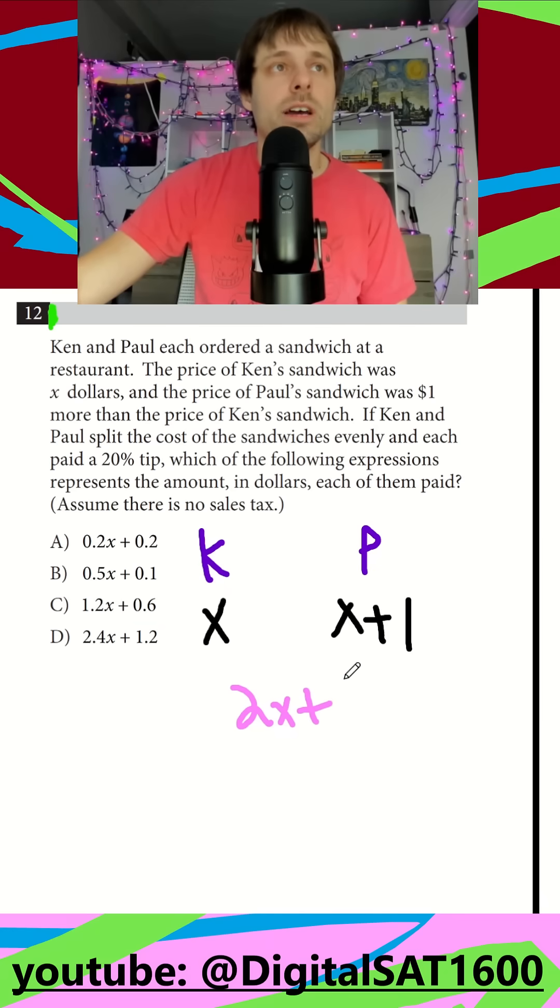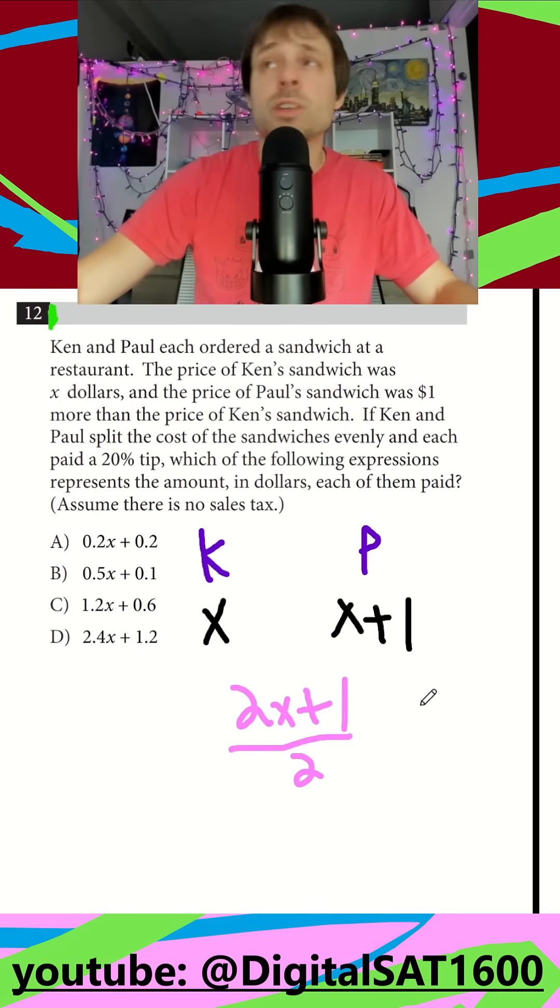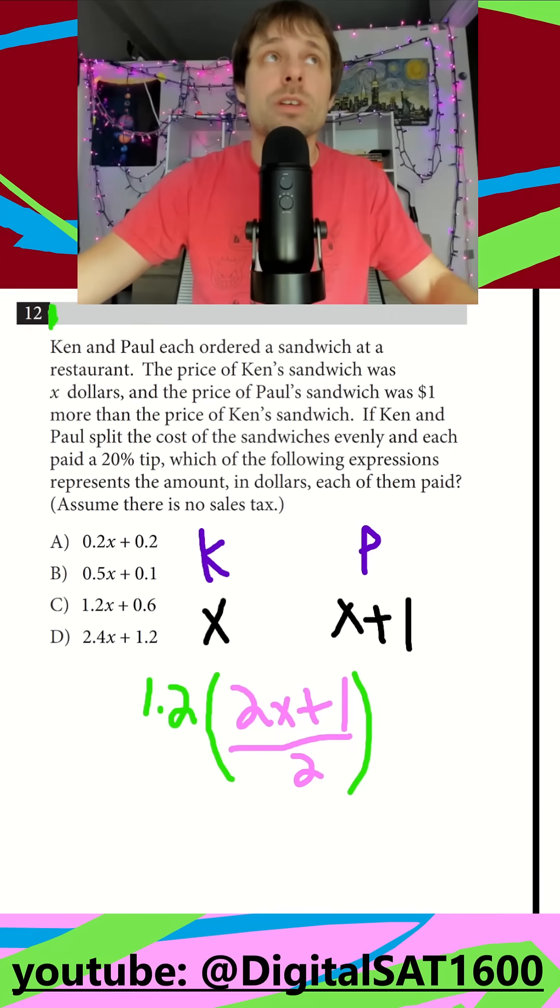Finally, they're going to be paying a 20% tip, so on the outside I could consider instead of doing the 20%, we want to do 1.2 because that's going to be a 20% increase on top of their cost.